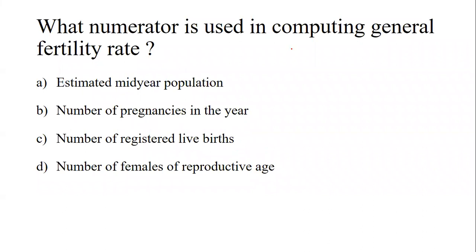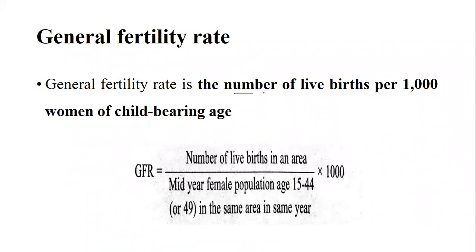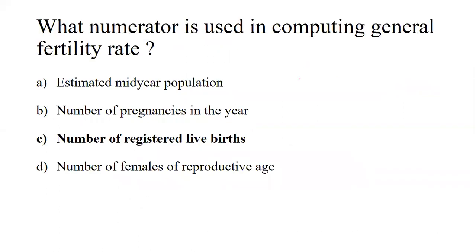Last question: what numerator is used in computing general fertility rate? The options are estimated mid-year population, number of pregnancies in the year, number of registered live births, and number of females of reproductive age. The general fertility rate is the number of live births per thousand women of child-bearing age. The formula is: number of live births in an area divided by mid-year female population aged 15 to 44, multiplied by 1000. So option C — number of live births — is the correct answer.